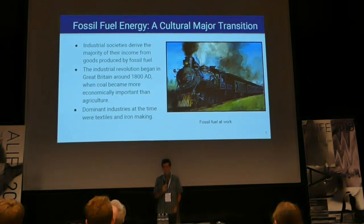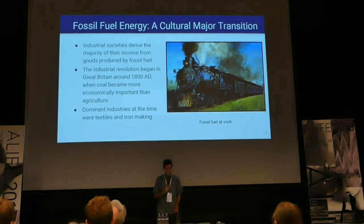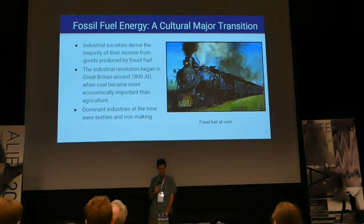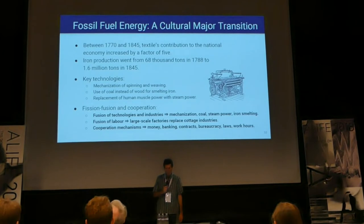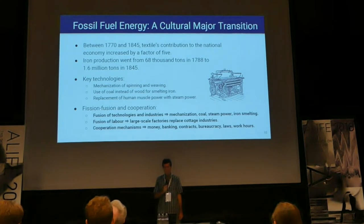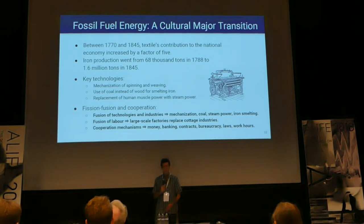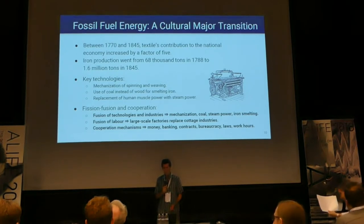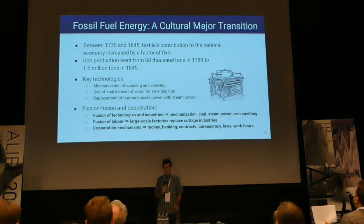An example from culture is the Industrial Revolution, which was mostly powered by fossil fuel energy. It began in Britain around 1800 AD, when coal became more important than agriculture, and the dominant industries were textiles and iron making. Between 1770 and 1845, textiles' contribution to the economy increased by a factor of five; iron production went from 68,000 tons in 1788 to 1.6 million in 1845. Three key technologies were involved: the mechanization of spinning and weaving, the use of coal instead of wood for smelting iron, and the replacement of human muscle power with steam power.